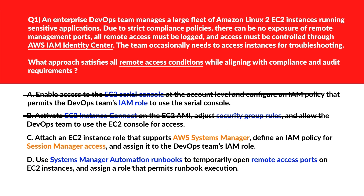Option D says: use Systems Manager Automation runbooks to temporarily open remote access ports on EC2 instances and assign a role that permits runbook execution. Automation runbooks that open remote access ports conflict with the requirement to avoid any internal or external port exposure. That being said, it's incorrect. Option C is the right answer.